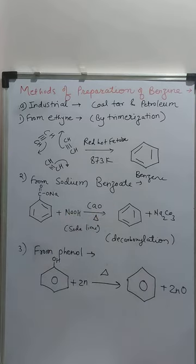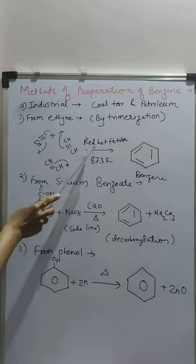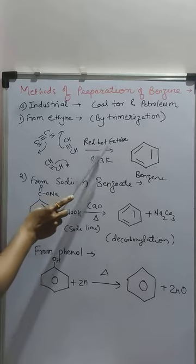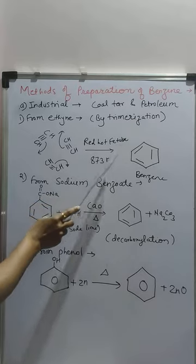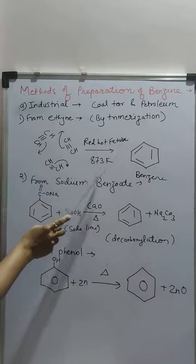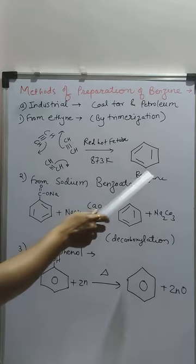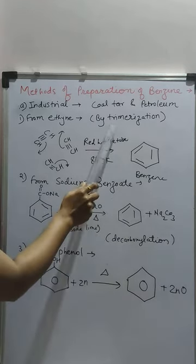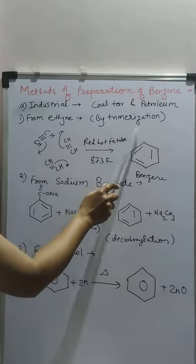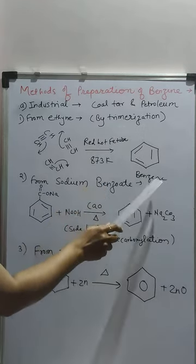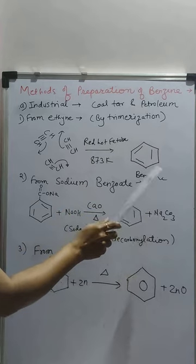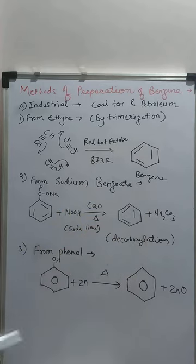To repeat: when ethyne is passed over a red hot iron tube at 873 Kelvin, it undergoes trimerization and benzene is formed.